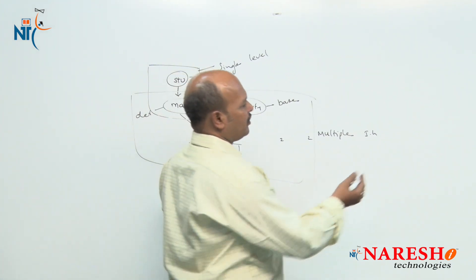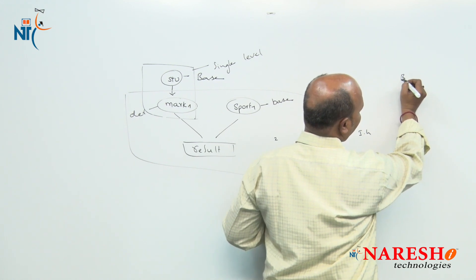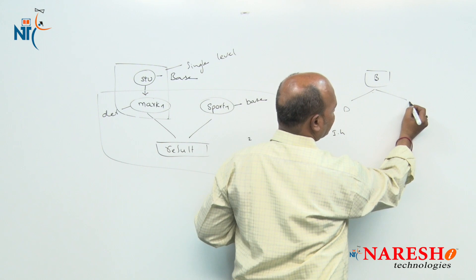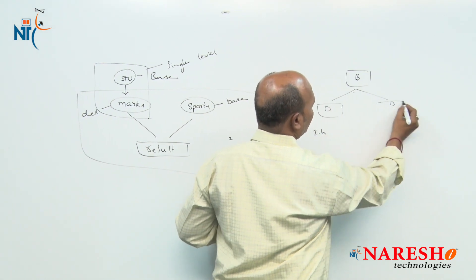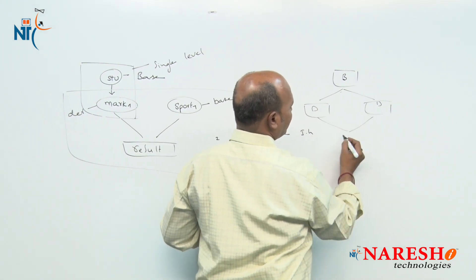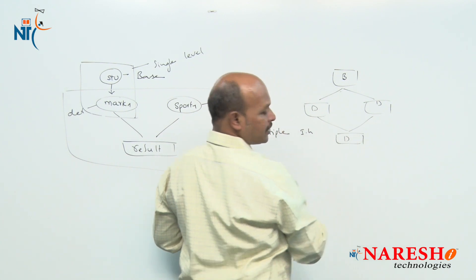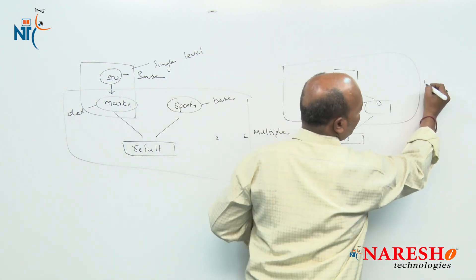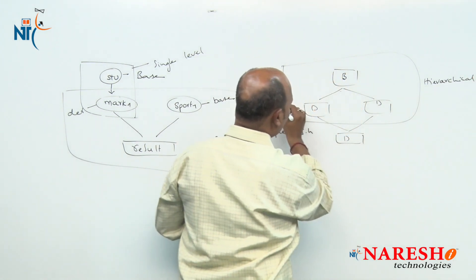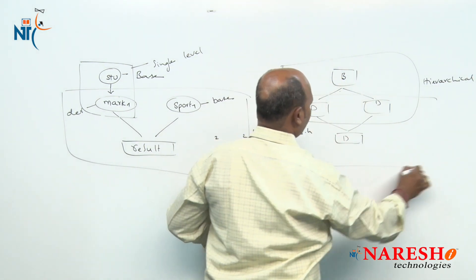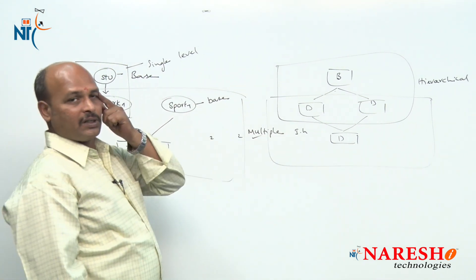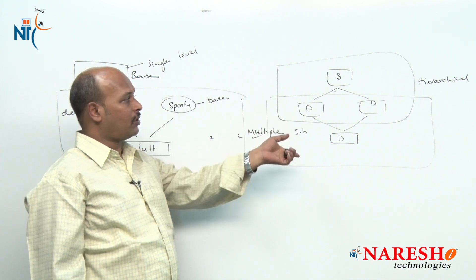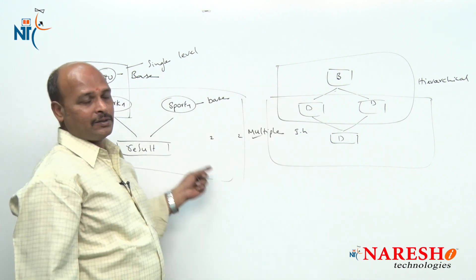Not only this — for example, here one base class has two derived classes. Now from these two derived classes, once again another derived class is formed. Here what it is called? It is called hierarchical. Now from those two derived classes, another class is derived — that is multiple. That means in this combination we are using hierarchical and multiple inheritance. That is why now it is called hybrid inheritance. Like this we have several examples for hybrid inheritance.